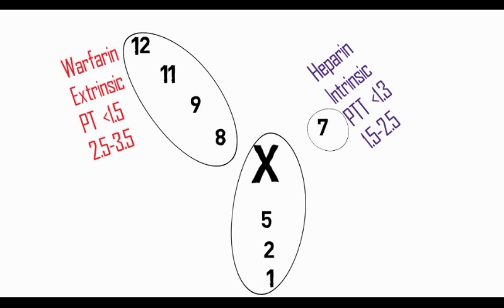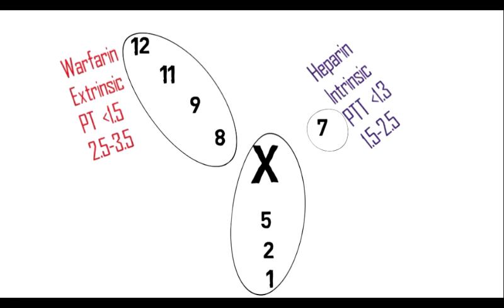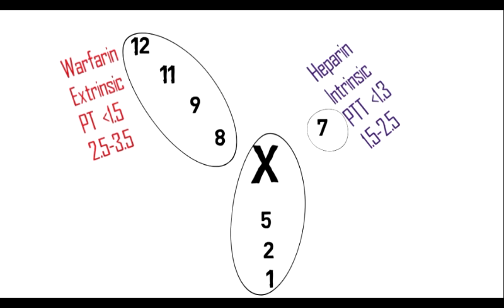This is the mnemonic to remember that when one uses warfarin, it acts on the extrinsic system and prolongs the prothrombin time, and the target is to increase the prothrombin time to 2.5 to 3.5 times normal.